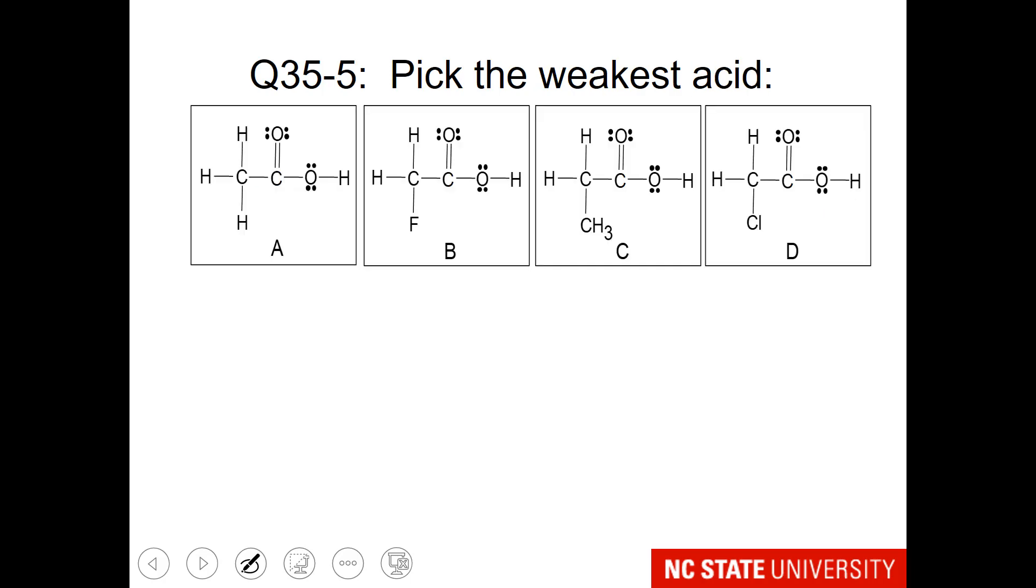And finally, the challenge question. The weakest acid will have the strongest bond to hydrogen. So that would be this red bond here. So look at the different groups on the carbon that is quite far away and think about which of these groups would strengthen the bond between oxygen and hydrogen.